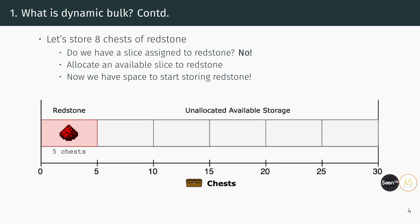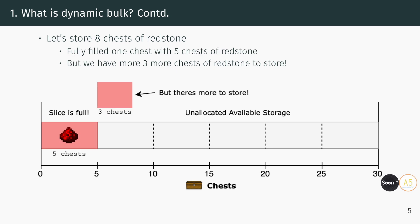Let's break down the basic logic of a dynamic bulk system with a simple example. Suppose we want to store 8 chests of redstone in a dynamic bulk storage system that is currently empty. The first task of the system is to check if there's an existing slice for redstone. If there is, the items can be stored there. However, in this case there isn't a slice allocated yet, so the system will need to allocate a new slice for redstone. We can store 5 chests of redstone in that newly allocated slice before it becomes full.